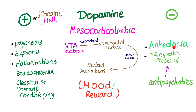On the other hand, dopamine shortage will lead to anhedonia — you're bored, you don't feel pleasure, you don't care. Also, the therapeutic effects of antipsychotics: antipsychotics are anti-dopamine. If dopamine leads to psychosis, then anti-dopamine leads to anhedonia. This is the therapeutic effect of antipsychotics — if you have psychosis due to dopamine excess, we give you a drug that inhibits dopamine.